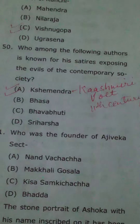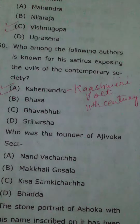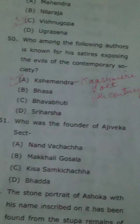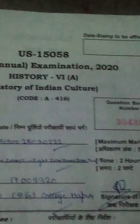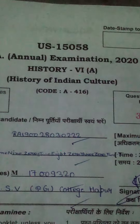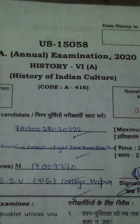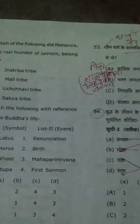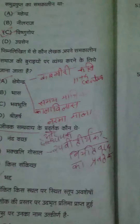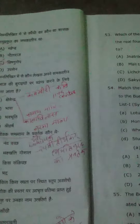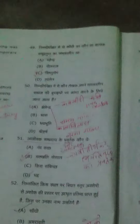Kshemendra was the person, and he was a Kashmiri poet of the 11th century. This is the solution video for A416 2020-21. For the remaining answers, kindly follow the second part of the video.